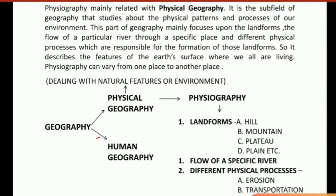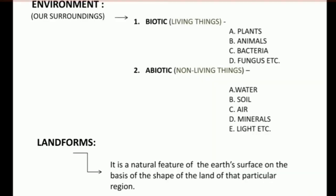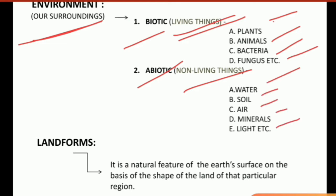Physical geography is mainly related with natural features or environment. Environment simply means our surroundings. In our surroundings we have different living things, known as biotic, and different non-living things, known as abiotic. Under living things we have different plants, animals, bacteria, and fungi. In the non-living things we have water, soil, air, minerals, light, etc.